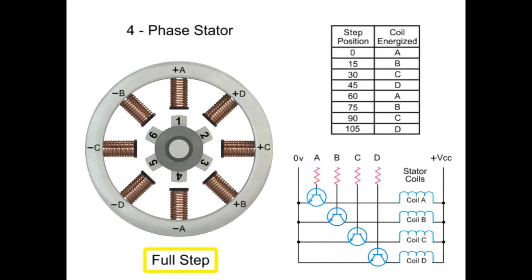For full step mode operation, energizing each set of coils sequentially, the rotor can be made to rotate or step from one position to the next by an angle determined by its step angle. Shaft rotation is achieved by energizing both windings while reversing the current alternately.